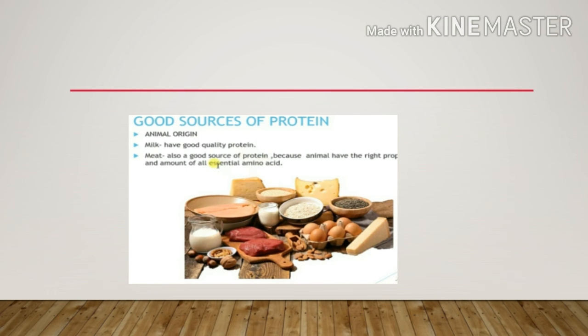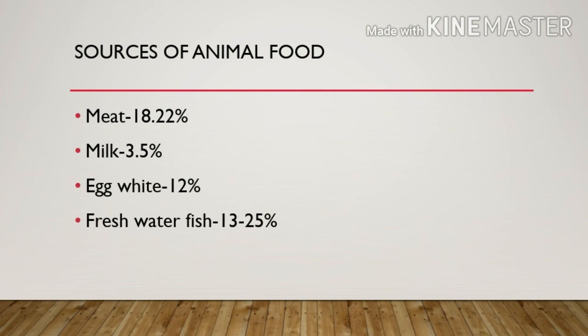Good sources of protein include animal-origin foods. Milk has good quality protein, and meat is also a good source of protein because animal foods contain the right amount of essential amino acids.